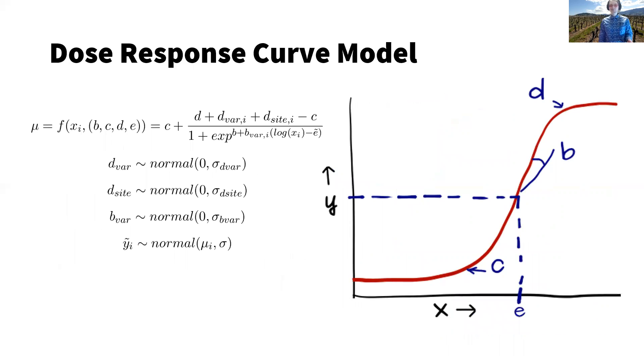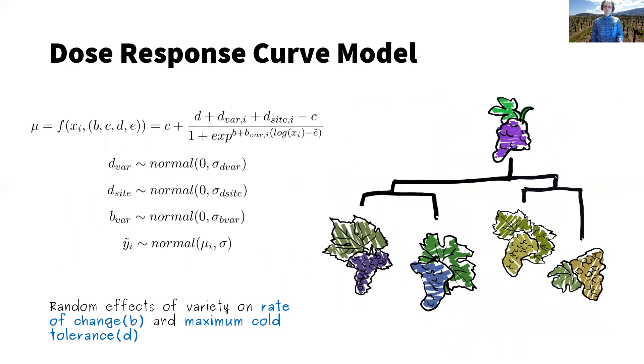Here is my model, if you like looking at models. But the main take home from this is that we include some random effects in our model. First, we have random effects for variety on the maximum cold tolerance, and also the rate of change of cold tolerance. This means varieties can have different values for these parameters, but we also get a general mean value for the overall species.